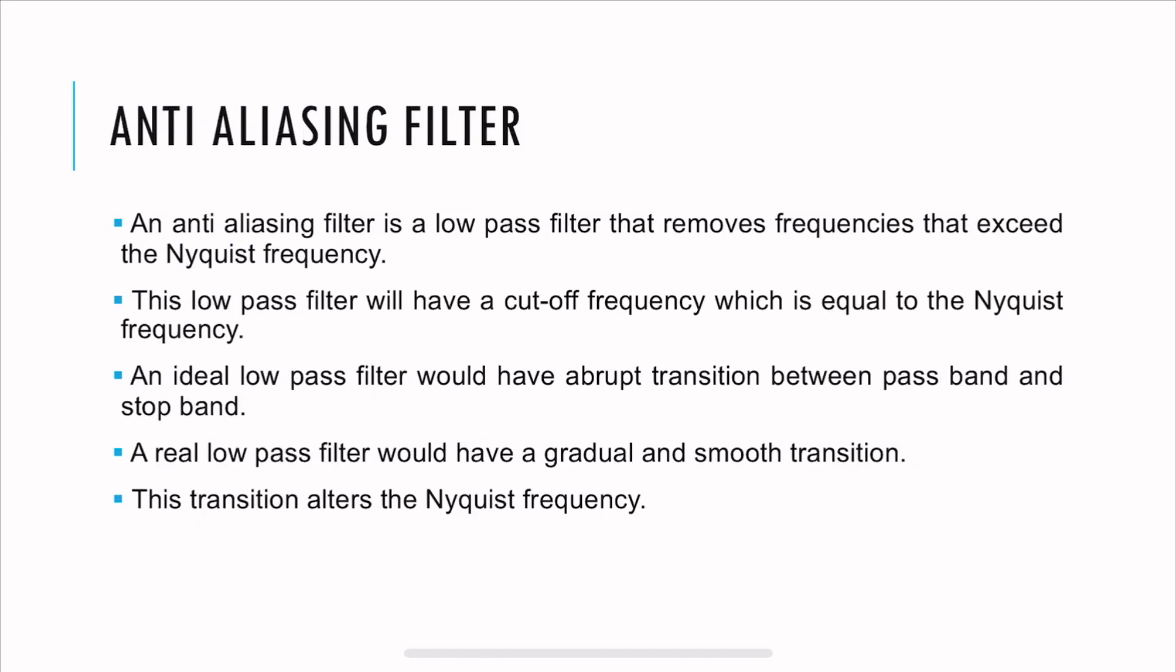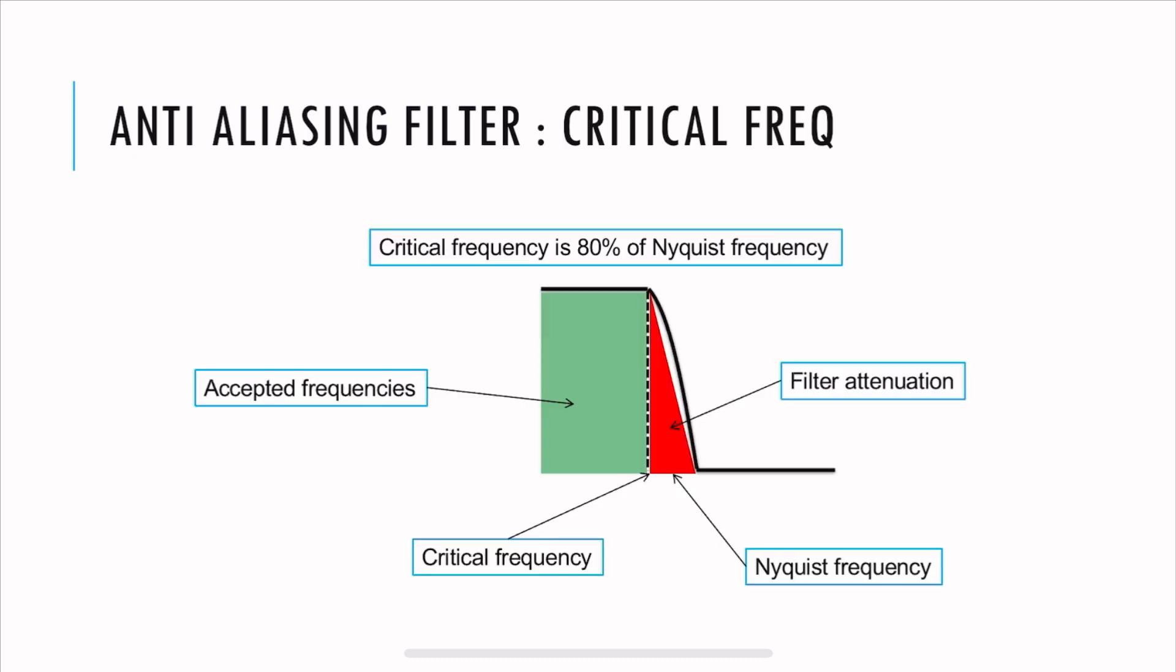There is also something called an anti-aliasing filter to prevent this from occurring. So it is a low-pass filter that removes frequencies that exceed the Nyquist frequency. So this low-pass filter will have a cutoff frequency which is equal to the Nyquist frequency. An ideal low-pass filter would have abrupt transition between the pass and stop band, but a real low-pass filter has a smooth and gradual transition. If you want to learn more about low-pass filter, check the link in the description below. This is a pictorial representation of the low-pass filter. As you can see here, the transition between the pass band and the stop band is not abrupt, but it's rather gradual. The green region represents the accepted frequencies. The red region is the filter attenuation. The critical frequency is 80% of the Nyquist frequency. And the filter attenuation is the reason why we say that the sampling frequency must not be twice the Nyquist frequency, but rather 2.5 times the Nyquist frequency. So if you intend to capture up to 20 kHz, the sampling frequency is not just 40 kHz, but rather 48 kHz.